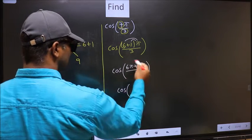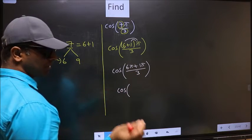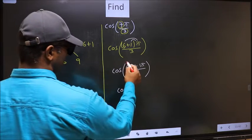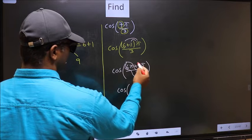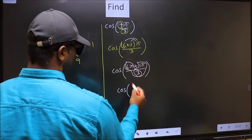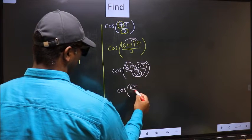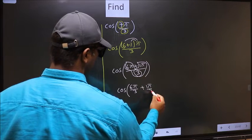Now in this, you should split the denominator in this way. That is 6π by 3 plus 1π by 3.